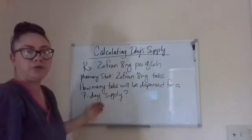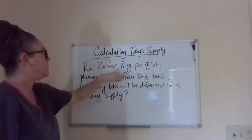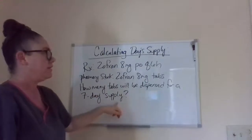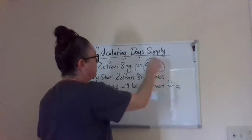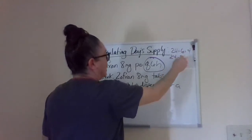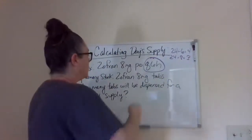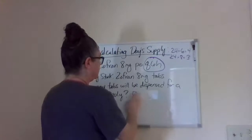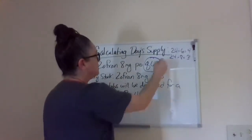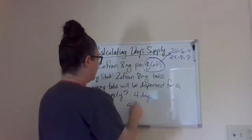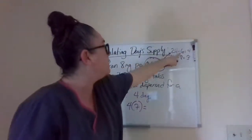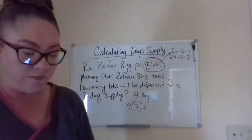The next one is a little bit trickier — a seven-day supply. The doctor has ordered Zofran 8 milligrams every six hours. In stock, you have 8 milligram tablets. The first thing to look at is that in a 24-hour period, every six hours is four times a day. If you did every eight hours, that would be three times a day. So 24 hours divided by six equals four times a day the patient can take the medication.